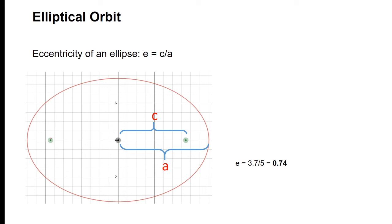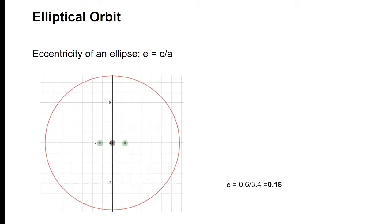Here, C is 3.7 and A is 5, giving an eccentricity of 0.74 — that is the eccentricity of a comet, and the Sun is located at one of the foci. For planets, eccentricity is very small. For example, an ellipse with eccentricity 0.18 looks almost like a circle — C is 0.6 and A is 3.4. The closer the focus is to the center, the smaller the eccentricity, and the more circular the ellipse. A circle has an eccentricity of zero.